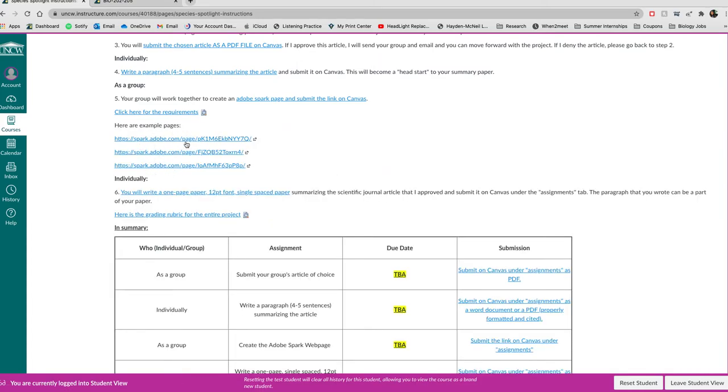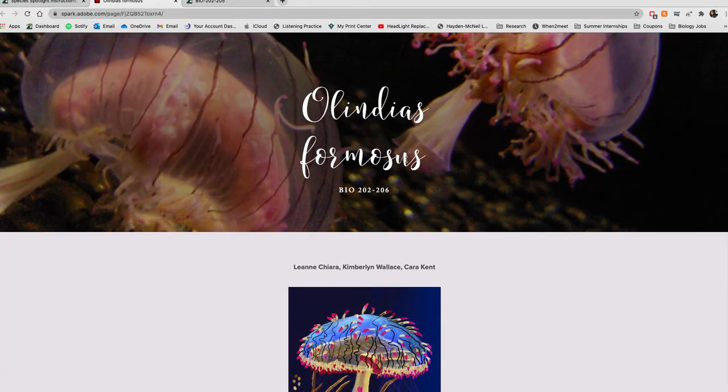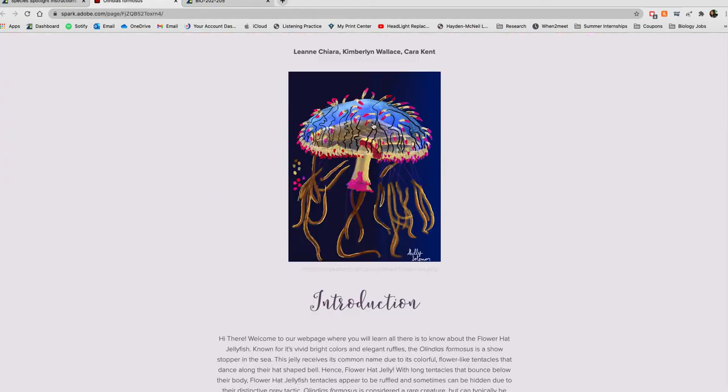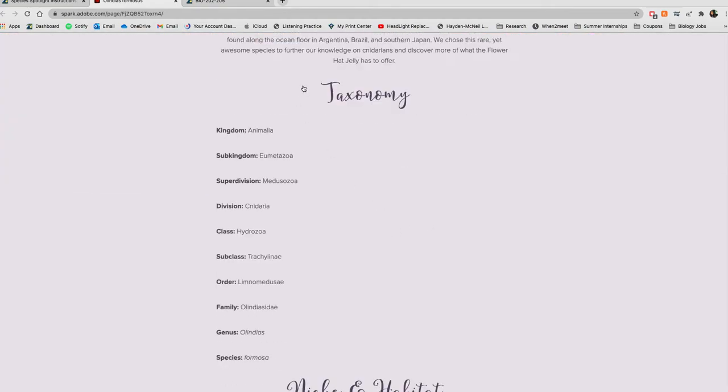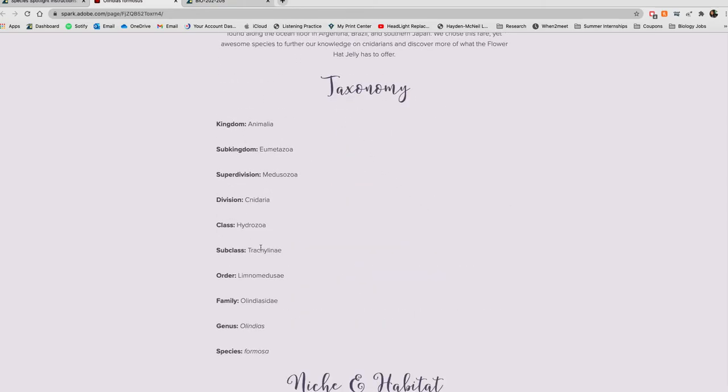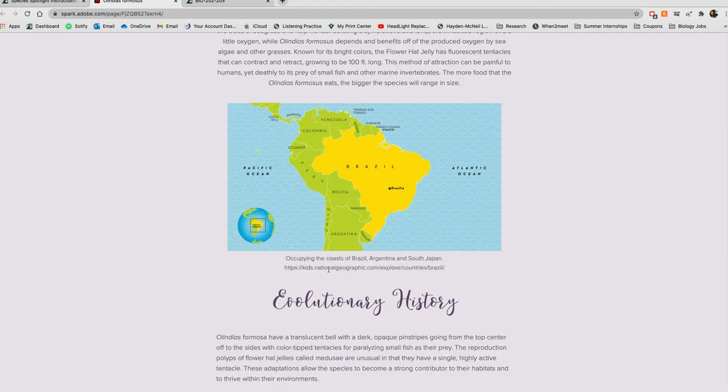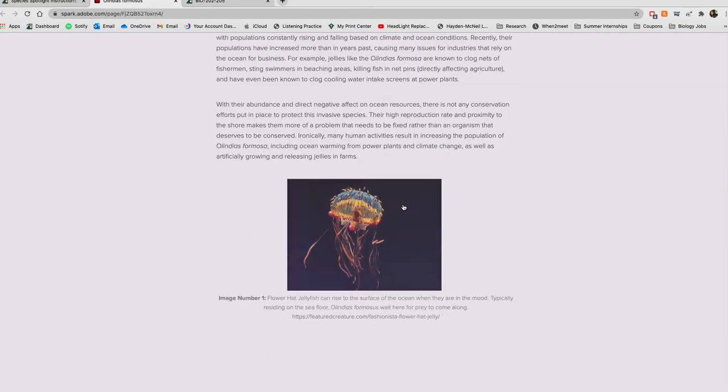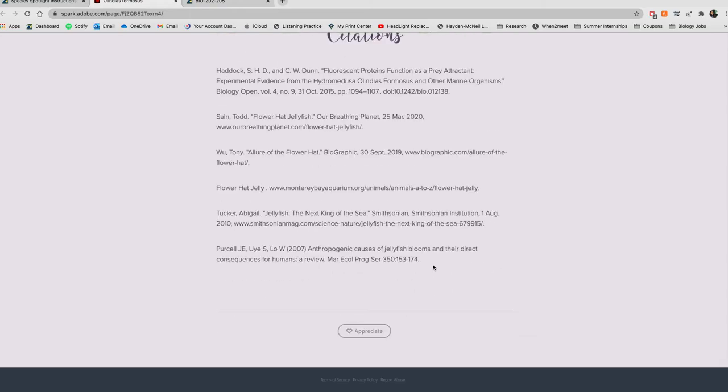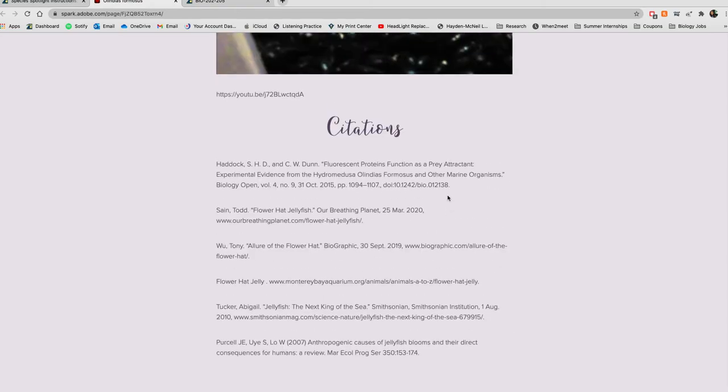These are some example pages. So these are some students that created a page last semester. Here's one on a jellyfish, I believe. So me personally, I don't like this font. I can't read it very well. It is like cursive and nice, but it's not as professional as I'd like. This is great though. They have an introduction paragraph here, a niche and habitat, all their taxonomies listed, nice images with links to those images, conservation bit, at least three pictures, some videos and their citations.